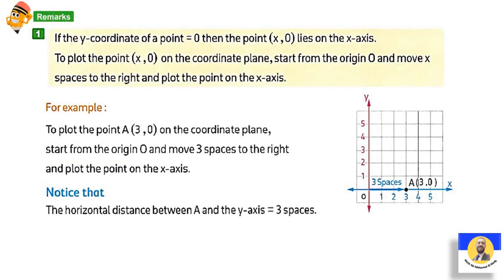Remark 1: if the y-coordinate of a point equals zero, then the point (x, 0) lies on the x-axis. This means we only move on the x-axis — for example, three steps — and the y is zero, so we don't go up at all. The point stays right on the x-axis. The horizontal distance from the point to the y-axis would be three spaces.